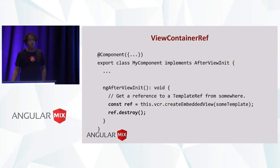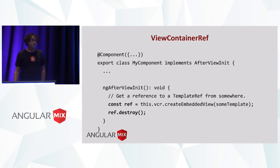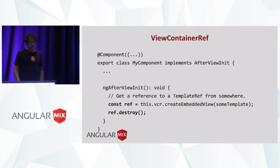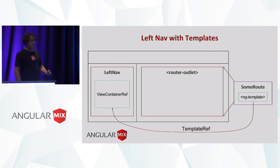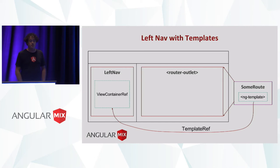When it comes time to remove it, we can get the reference returned from createEmbeddedView and destroy it. For example, when we navigate away from one route, we probably want to remove that rendered template before the next route loads its. So our final design: routes specify an ng-template, we send that template ref via a service to the left nav, and the left nav uses a view container to render it dynamically at runtime.